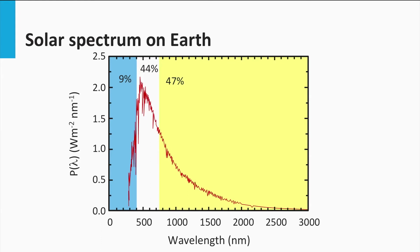If we look at the solar spectrum, 9% of its energy is in the UV range at wavelengths smaller than 400 nm, 44% of its energy is in the visible range, whereas 47% of its energy is in the infrared.